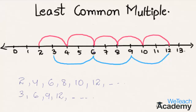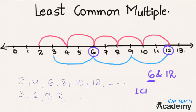The two lines meet at the number 6, so let us encircle it. Then the two lines meet again at the number 12, so let us encircle that too. The common multiples of both 2 and 3 are 6 and 12. The first common point where the two lines meet is the number 6, so the least common multiple is 6.